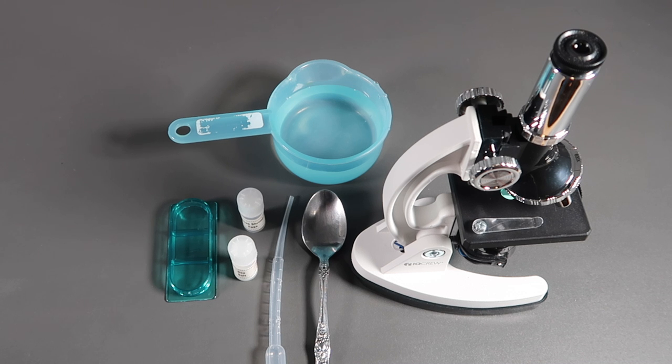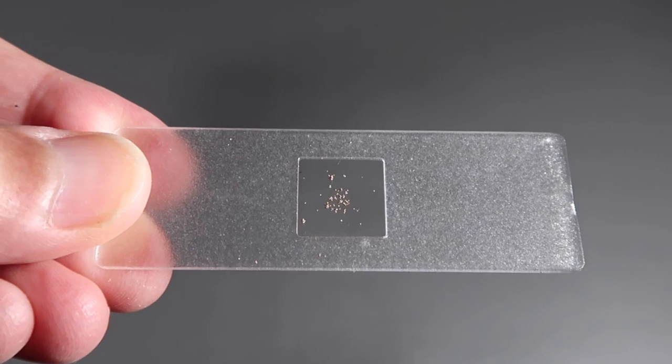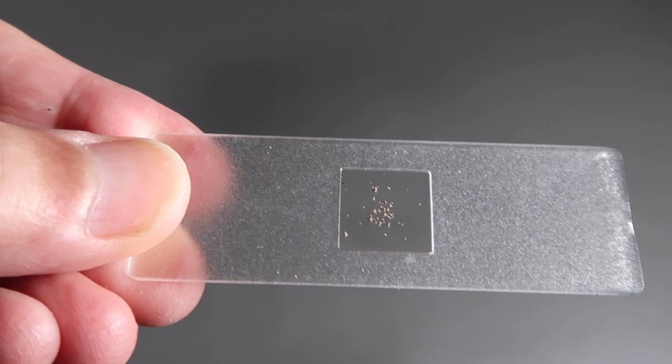Let's take a look at the brine shrimp experiment. For this we're going to need the microscope. Obviously. A cup of water, a teaspoon, a pipette. Which notice does not come with this kit. The shrimp hatchery, which is this little blue case here. A pot of brine shrimp eggs. And a pot of sea salt. And this is what the dry eggs look like.